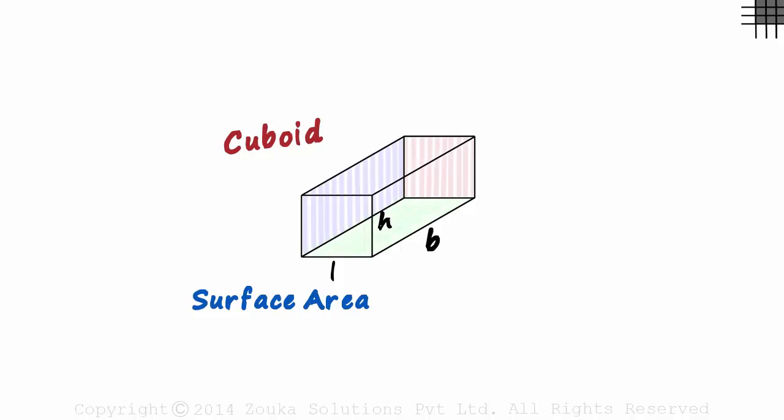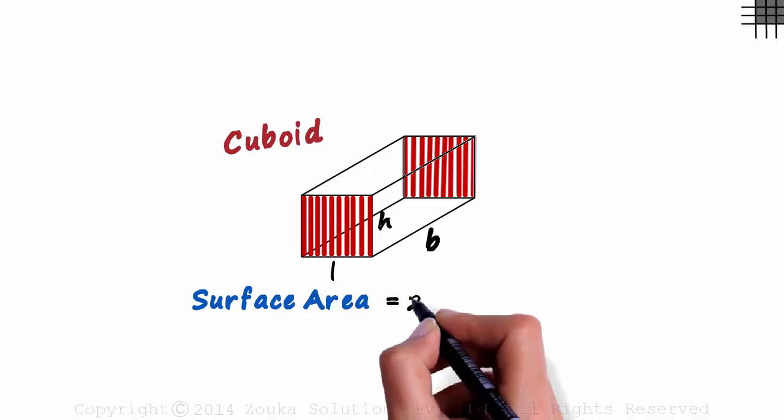A cuboid has six surfaces in all. One at the front and one at the back. Their areas will be equal as it has a uniform cross section. Area of each will be L times H and the total area of both together will be 2LH.